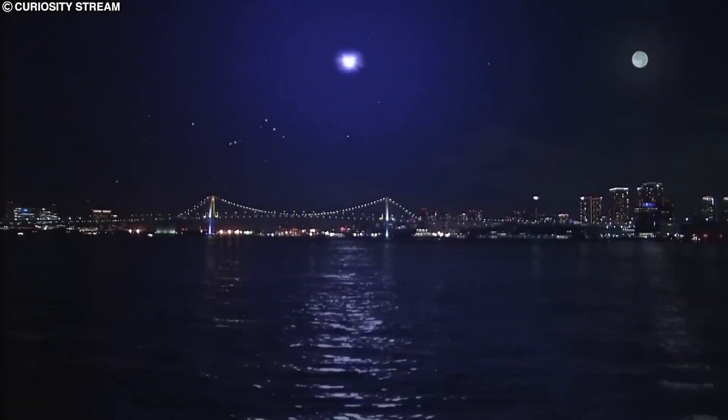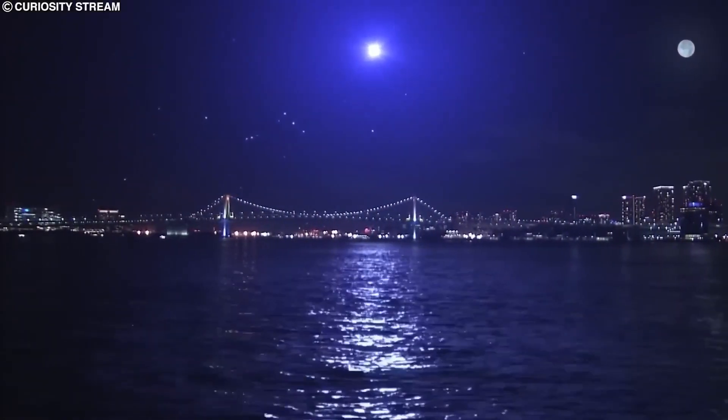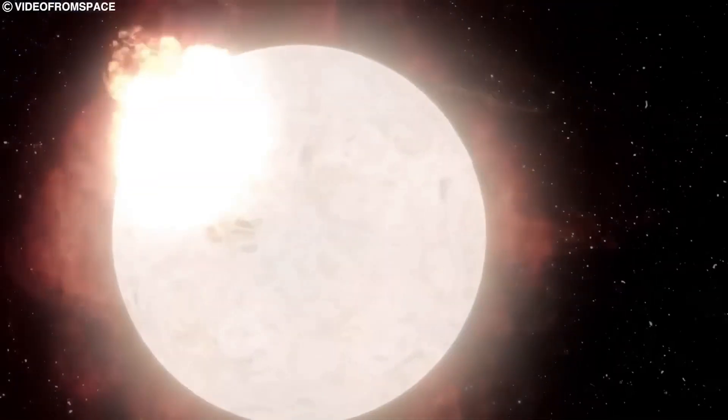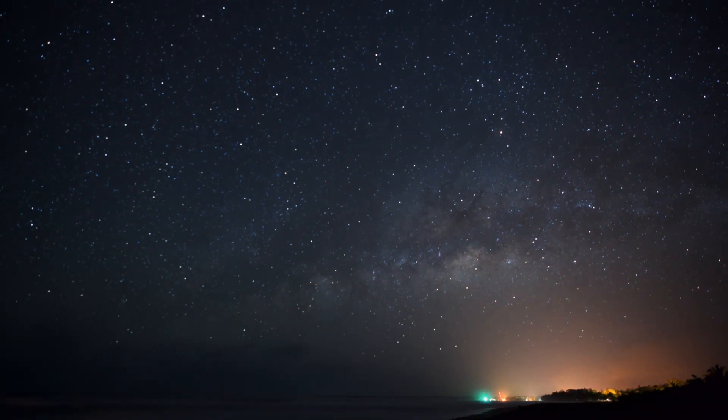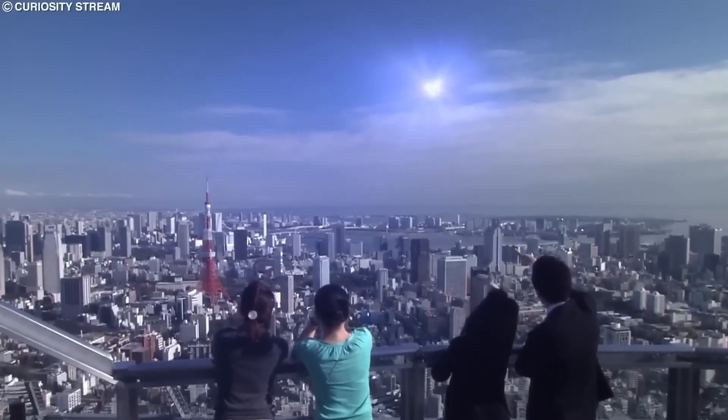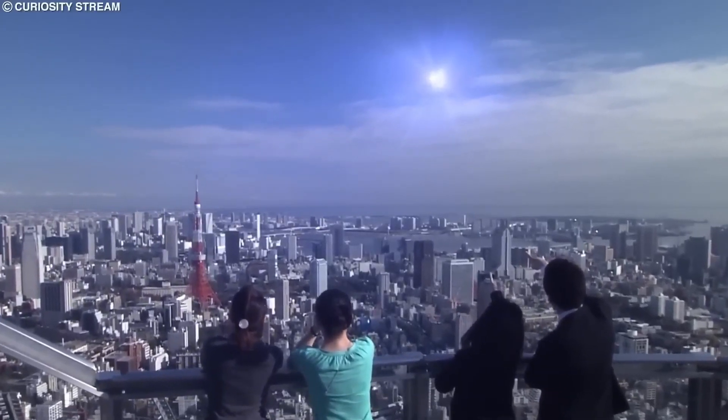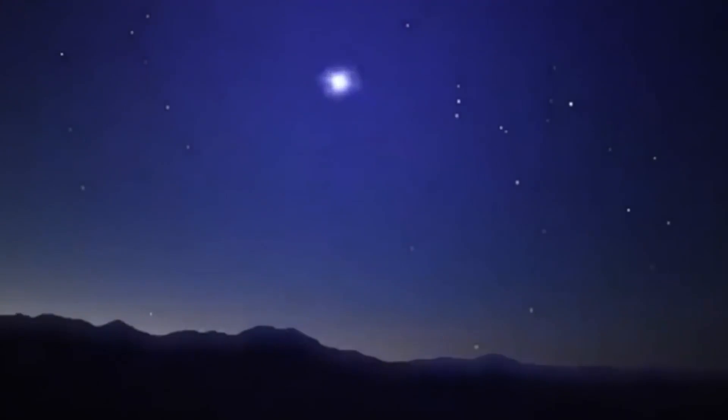Shortly after, Betelgeuse would go all out and shine as bright as a full moon for about one or two weeks. Imagine having a celestial disco ball lighting up the night sky. But as time goes on, the star would gradually fade over several months, still visible in the daytime for six to twelve months. And at night, you could catch a glimpse of it with the naked eye for another one or two years.